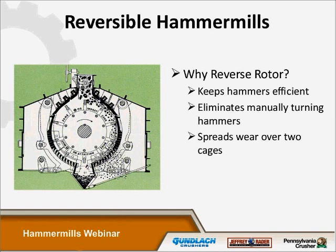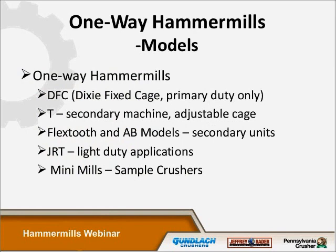Regular reversal keeps the hammer face sharp so you don't need to go in and turn the hammers by hand. Because of the combination of both the Penn brand and the Jeffrey Rader brand, we have several styles of one-way, non-reversible hammer mills. These include the old DFC fixed cage machines used as primary crushers, our T hammer mills as secondary machines with adjustable cages, the Jeffrey Rader flex-tooth machines, the AB hammer mill line, a small group of light-duty JRT machines, and finally the mini mill or sample crushers.